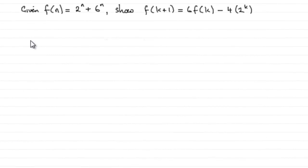Now for the first part of this question, we're given that f(n) equals 2 to the power of n plus 6 to the power of n, and we're asked to show that f(k+1) equals 6f(k) minus 4 multiplied by 2 to the power of k.